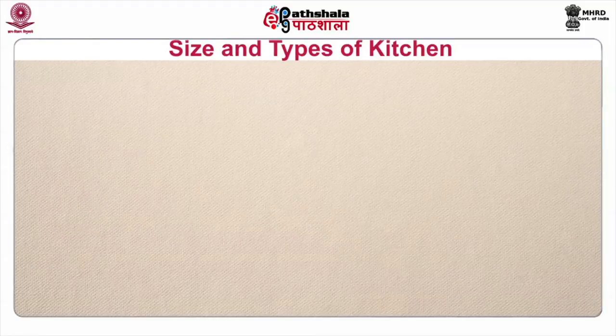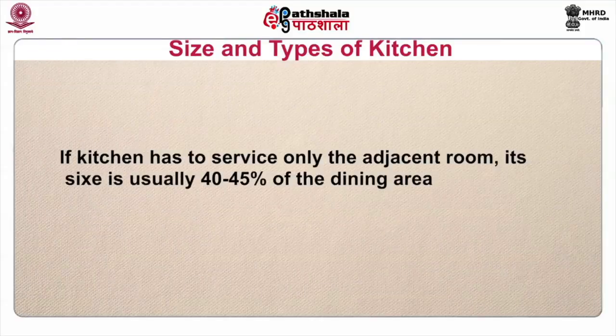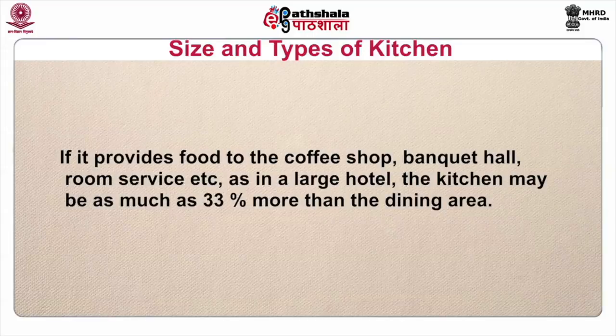The size of the kitchen will vary according to the nature and amount of work to be done in it. Usually the space allowed to a kitchen is approximately half that of the dining area, but the ratio varies with the size and type of establishment and the menu pattern. If the kitchen has to service only the adjacent room, its size is usually 40 to 45 percent of the dining area. If it provides food to the coffee shop, banquet hall, room service, etc., as in a large hotel, the kitchen may be as much as 33 percent more than the dining area.